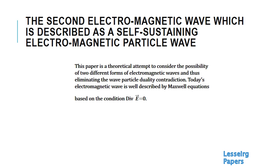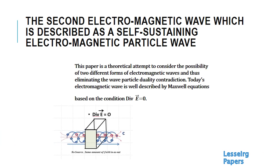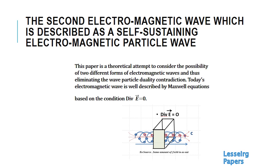The second plausibility test of this self-sustaining electromagnetic particle wave is that it would also have to meet the definition that the divergence of the electric field equals zero. As you can see from this picture, this electromagnetic wave fulfills that requirement because the same amount of fields would go into a test volume as would go out.